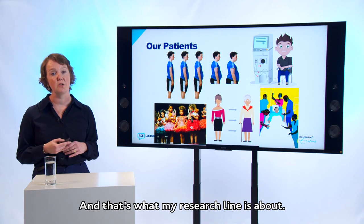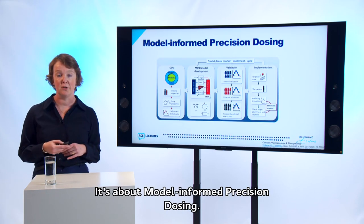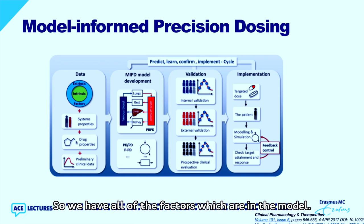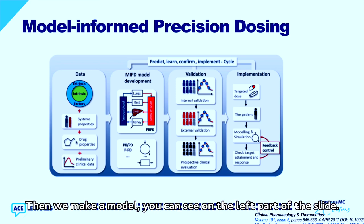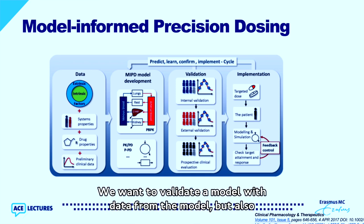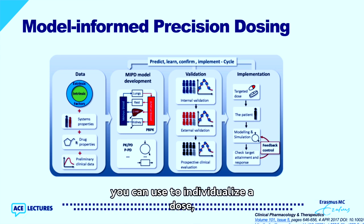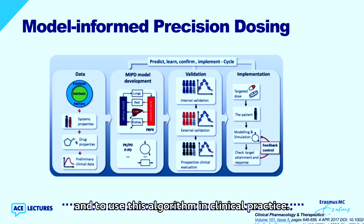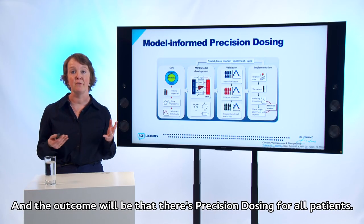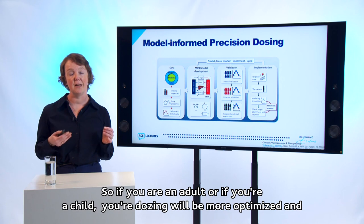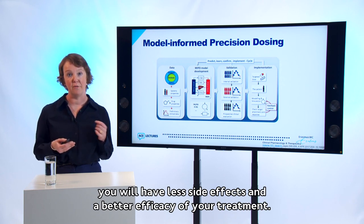So the efficacy of the drug is not correct, and we can do better. That's what my research line is about: model-informed precision dosing. We use many patient characteristics combined in a model, validate it with data from an external database, and make an algorithm to individualize doses in clinical practice. The outcome is precision dosing for all patients — whether adult or child — with less side effects and better treatment efficacy.